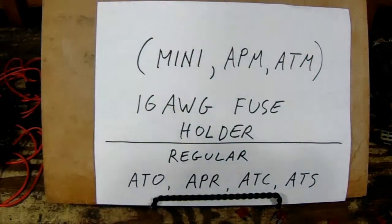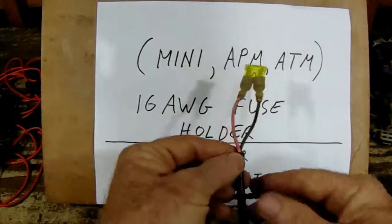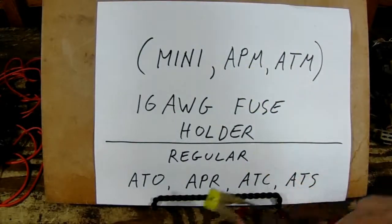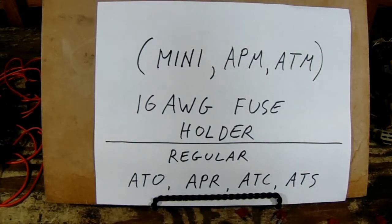And if you want to use the regular size fuses like this, the regular goes by these designations: ATO, APR, ATC, ATS. Thanks for watching, and good luck.